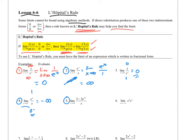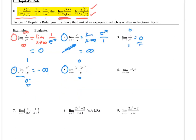Number 5: the limit as x goes to 0. Plugging in 0 gives 3 minus 3 on top and 0 on the bottom, so this is a candidate for L'Hopital's Rule. Taking the derivative of the numerator gives negative 9e to the 3x — we multiply by the chain rule factor of 3 — and the derivative of the bottom gives 1. As x goes to 0, the numerator goes to negative 9 over 1, so the limit is negative 9.